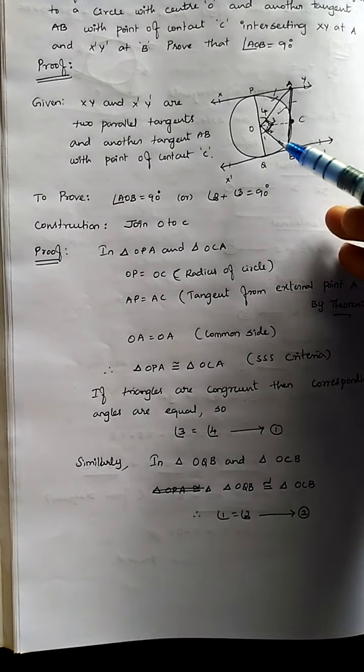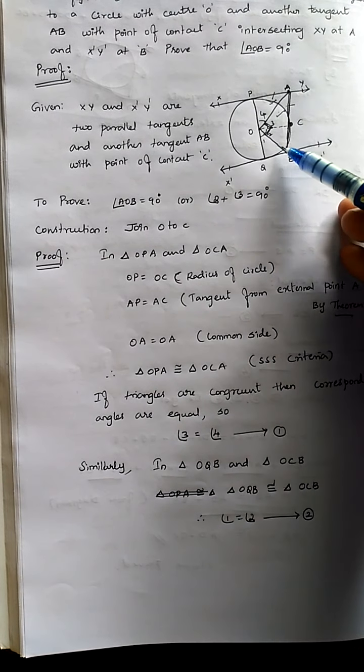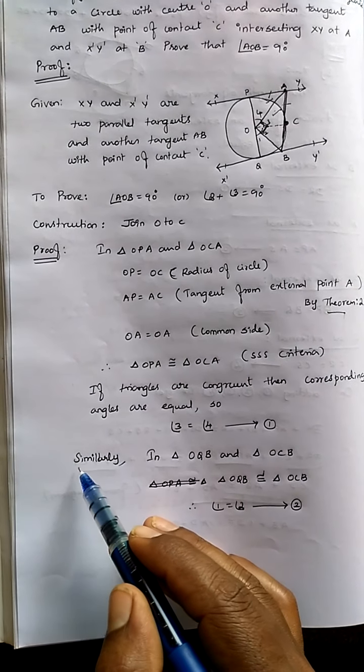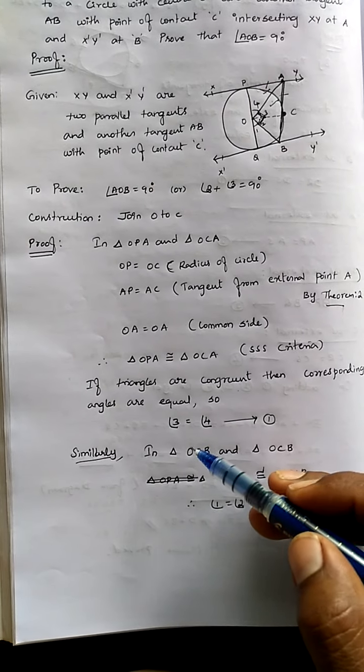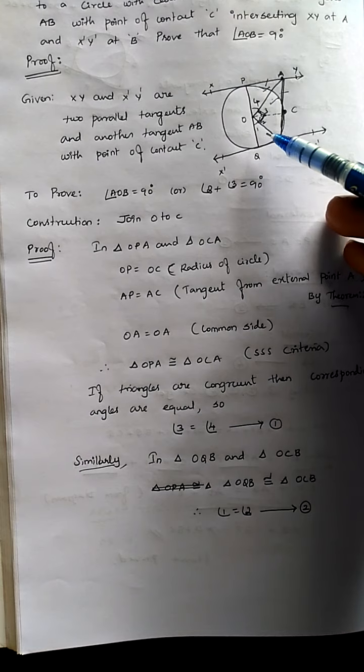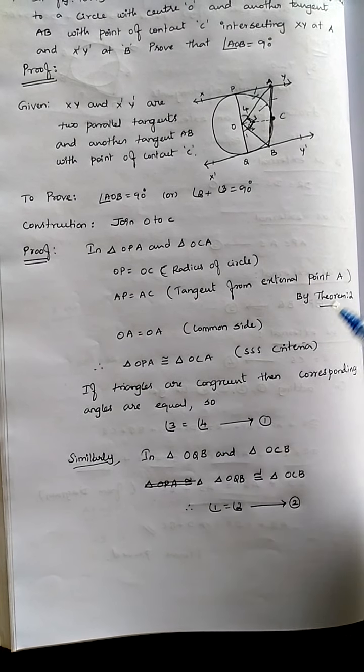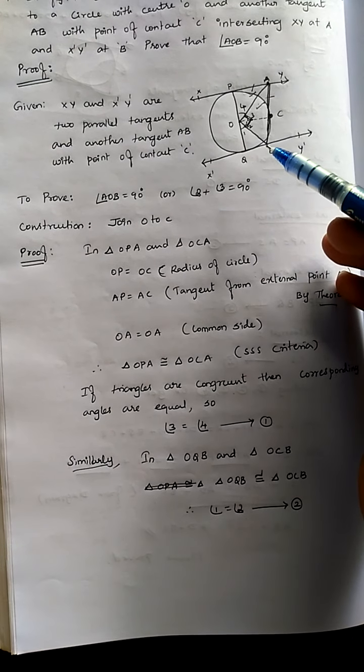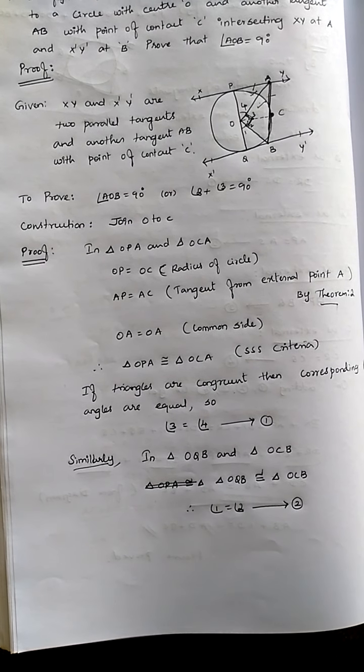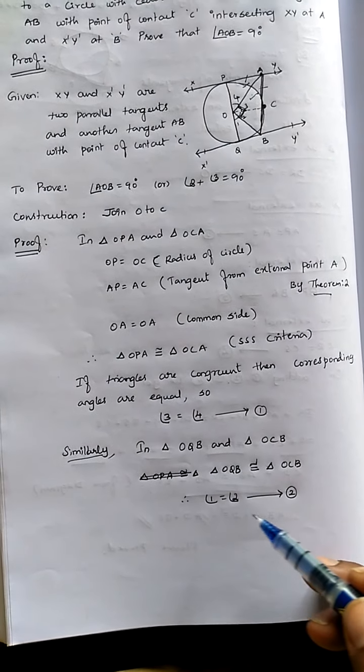Similarly, take triangles OQB and OCB. If we apply the same concept, these triangles become congruent. If the triangles are congruent, sides are equal and angles are also equal. We need only the angles, so angle 1 equals angle 2, which is equation number 2.